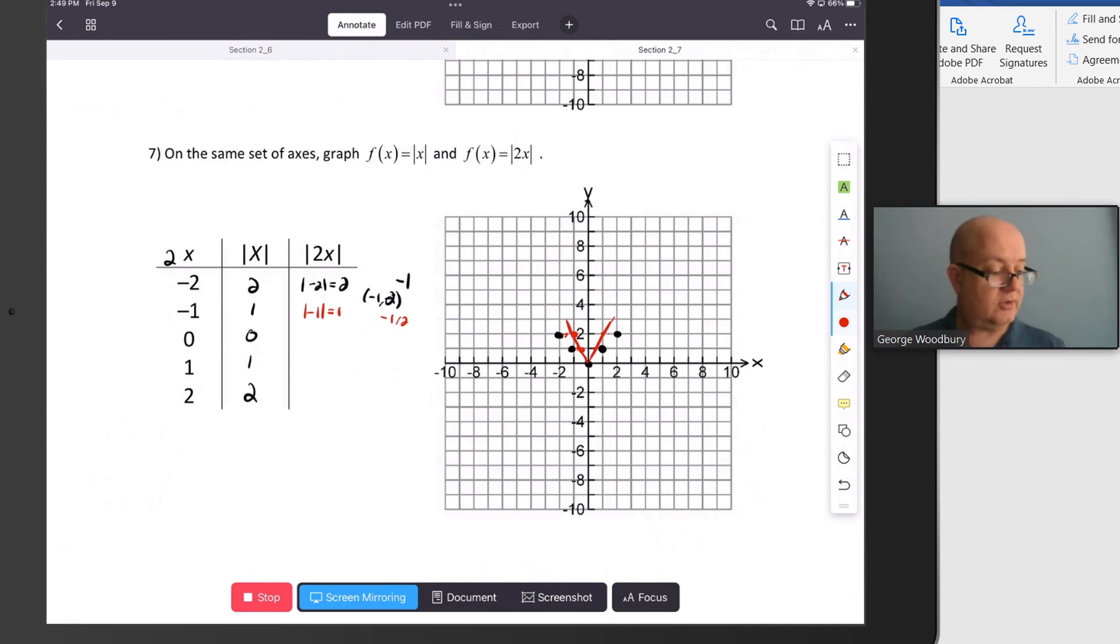We could also think of this, though, as 2 times the square root of x. And so we could also see that each point is 2 times higher than some point on the graph. The horizontal and vertical shifts and stretches kind of go hand-in-hand. It just depends on the way you're looking at them.